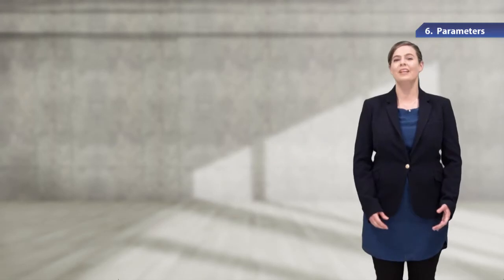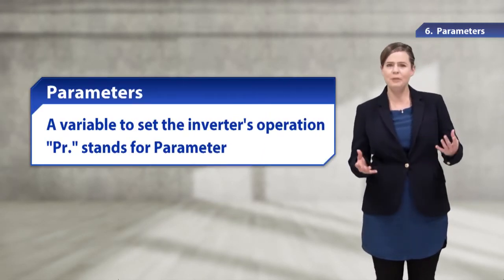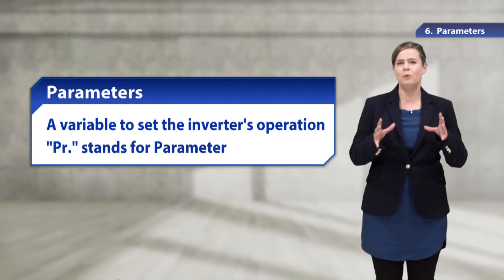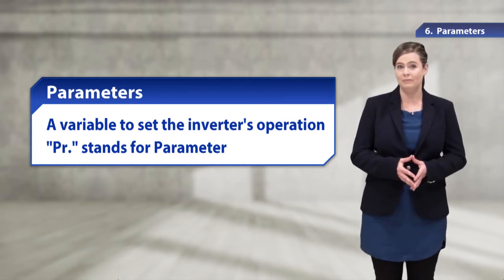To set an inverter, we need to understand the parameters. A parameter is a variable to set the inverter's operation and needs a numerical value for each setting. The parameter is abbreviated to PR, and the types and numbers of parameters vary depending on the inverter model.